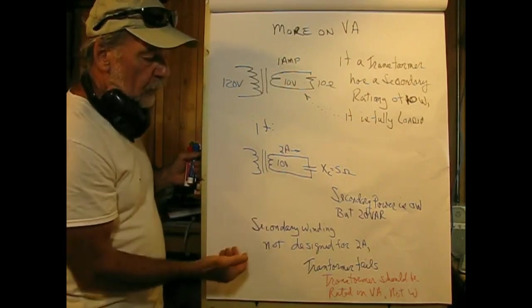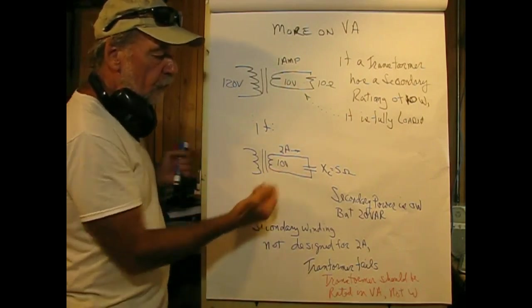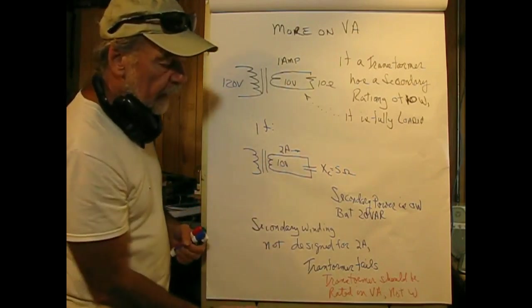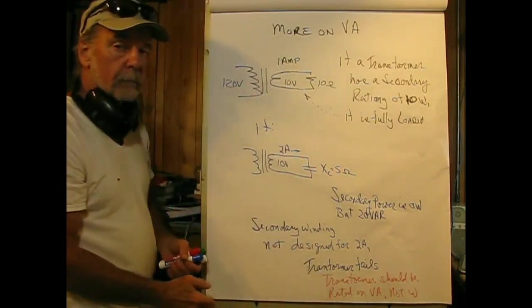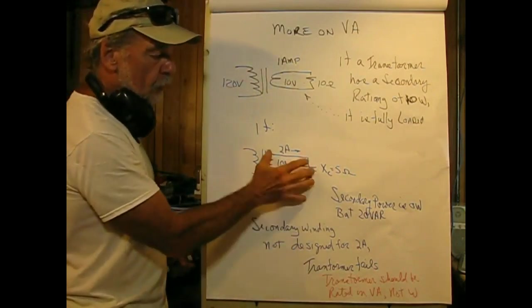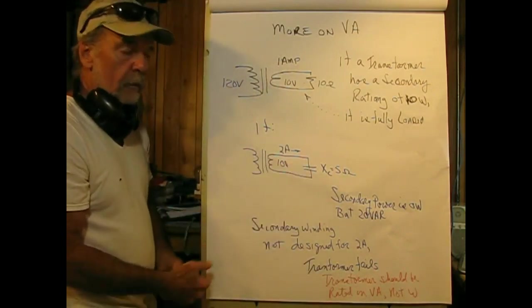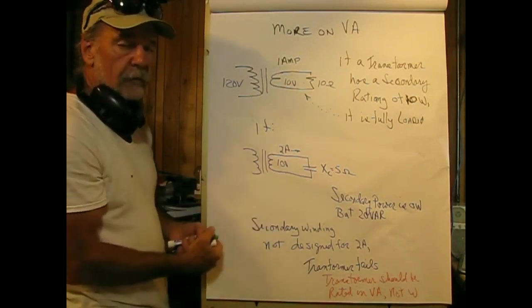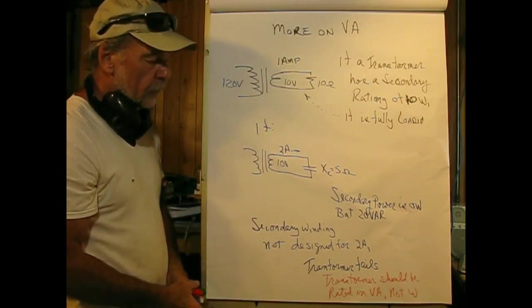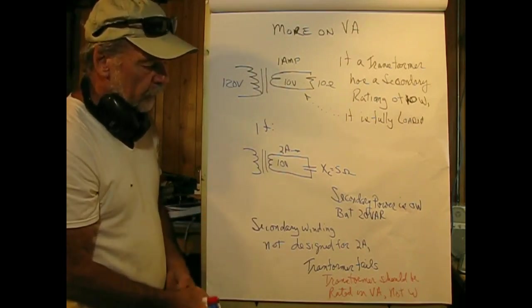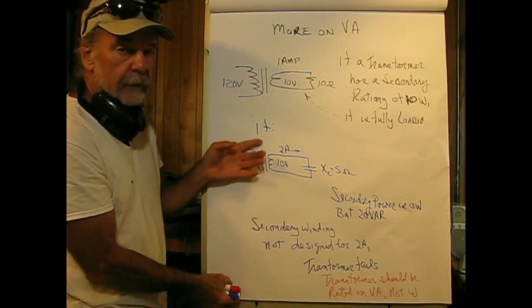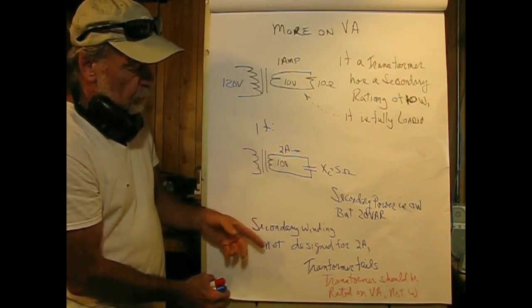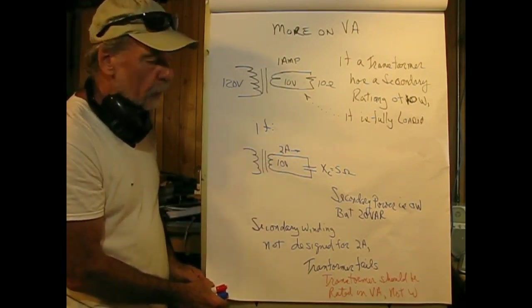When manufacturers make transformers, they don't specify that the secondary is so many watts, they specify the secondary in volt amperes, and that is to take care of situations like this. Because if this is rated in watts, I could say to manufacturers, look, I didn't draw any power and the transformer burnt out. To an extent, it's a valid argument, but it's out of the context of what the spec really means. You'll see a lot of stuff on transformers with the unit VA, not watts, and that is the reason why.